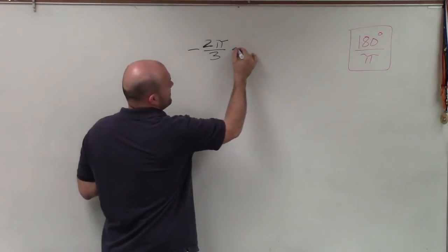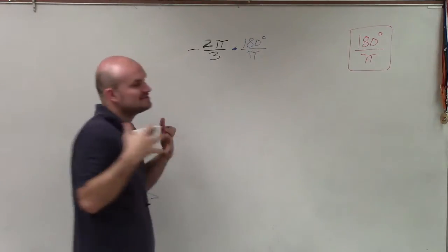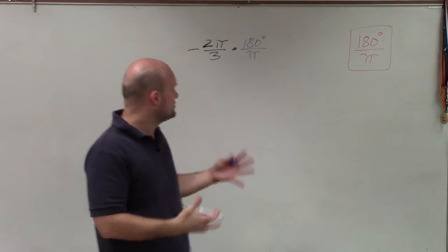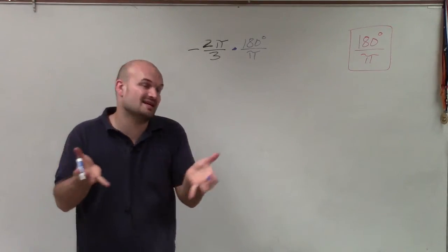So I multiply it by 180 degrees divided by π. Now, it's very helpful when doing it this way to multiply your numerator and multiply your denominator so you can represent it as one single fraction.